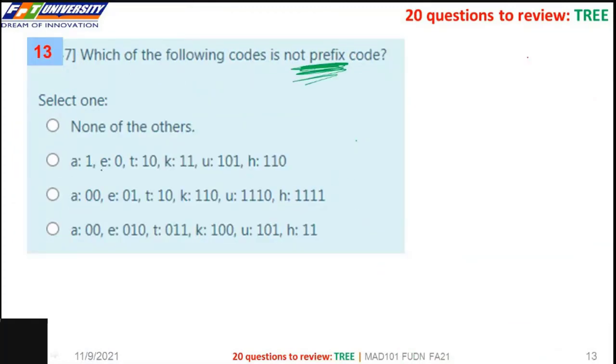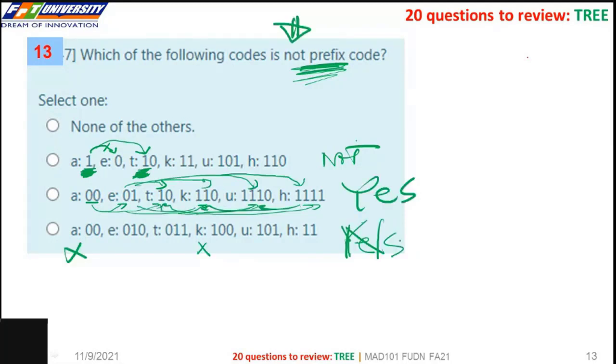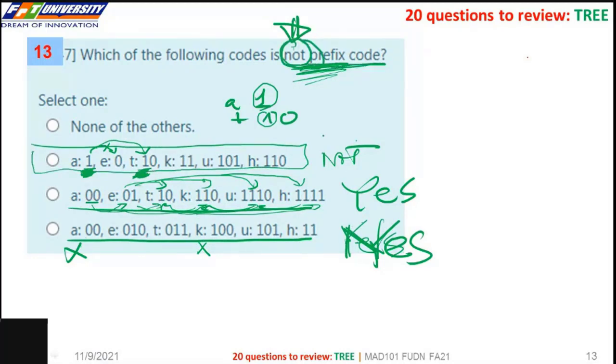Prefix code. We check the prefix. So 1, okay. No, because the bit is the prefix of bit prefix. So here, okay. Maybe yes. So here, yes. This is prefix code. But A is not a prefix code. So the correct answer is B.